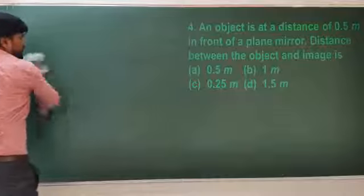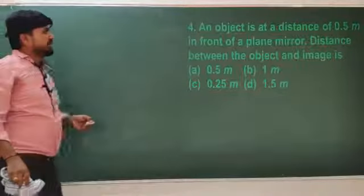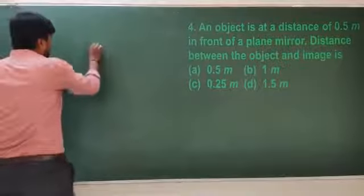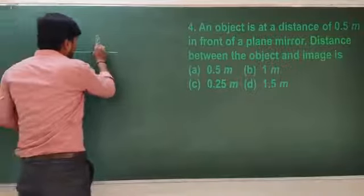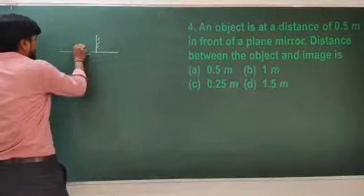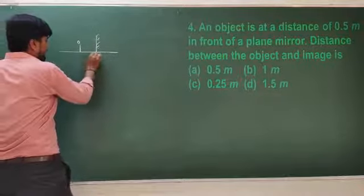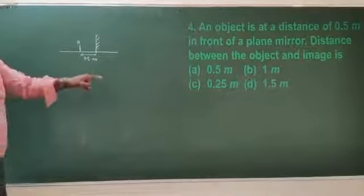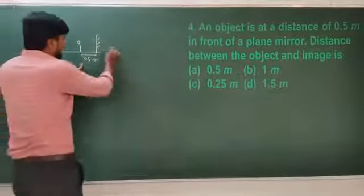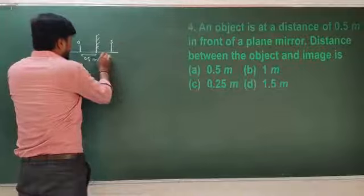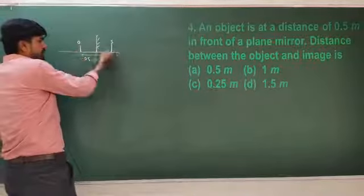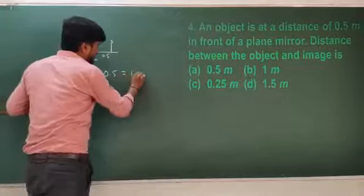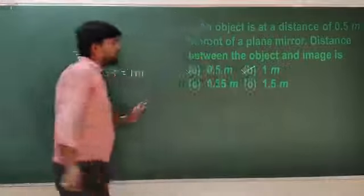Next question: the object is at a distance of 0.5 meters in front of a plane mirror. If the object is placed at 0.5 meters, the image is also formed at 0.5 meters behind the mirror. The distance between the object and the image is 0.5 plus 0.5, giving us 1 meter. The correct option is Option D.